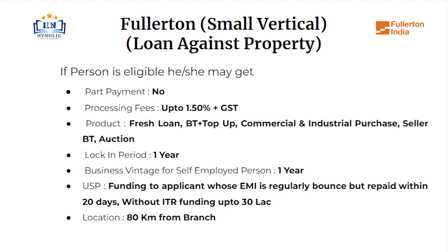A unique selling point or USP is one of the important things in a company or business. The USP of Fullerton Small Vertical Loan Against Property is funding to applicants whose EMI is regularly bounced but repaid within 20 days, without ITR funding up to 30 lakh. Location coverage is up to 80 km from branch.